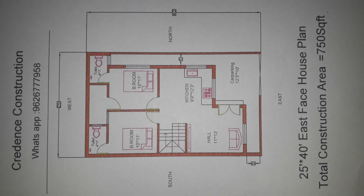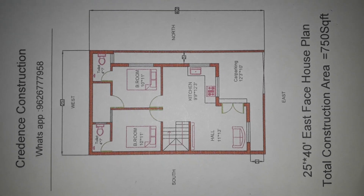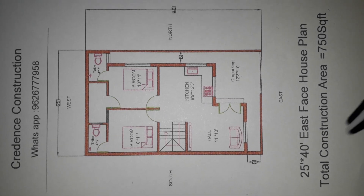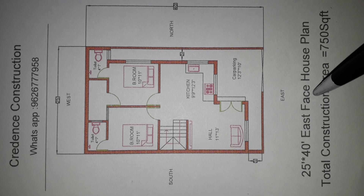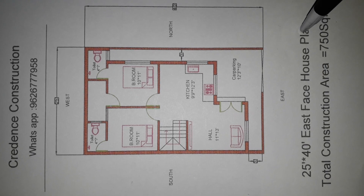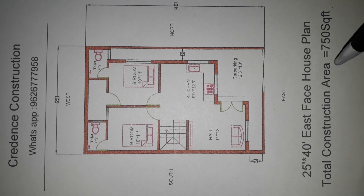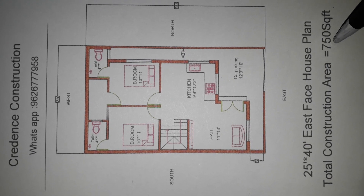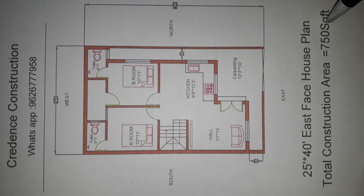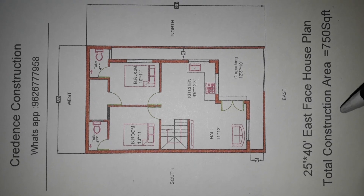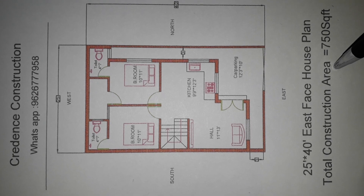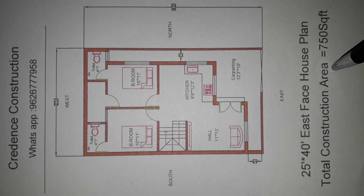Hello everyone, welcome to my YouTube channel. Now we will talk about the East Face house plan. Total construction area is 580 square feet. Total construction cost is 13 lakhs.